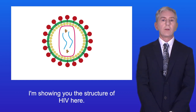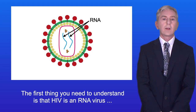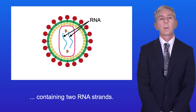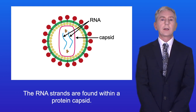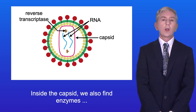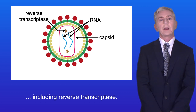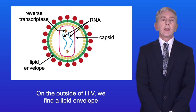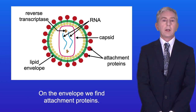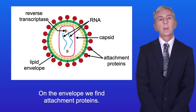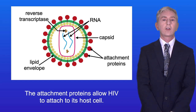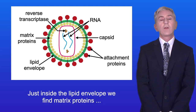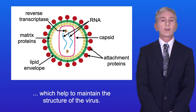Here is the structure of HIV. HIV is an RNA virus containing two RNA strands, found within a protein capsid. Inside the capsid we also find enzymes including reverse transcriptase, whose function we will look at later. On the outside of HIV we find a lipid envelope, and on the envelope we find attachment proteins, which allow HIV to attach to its host cell. Just inside the lipid envelope we find matrix proteins, which help to maintain the structure of the virus.